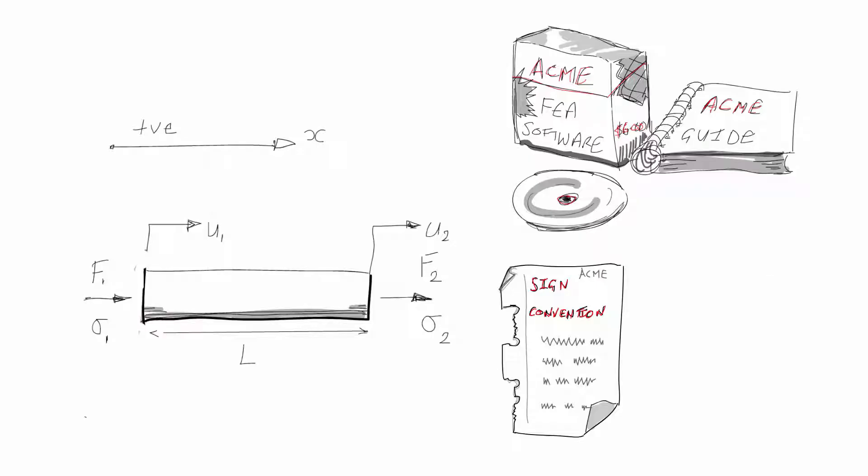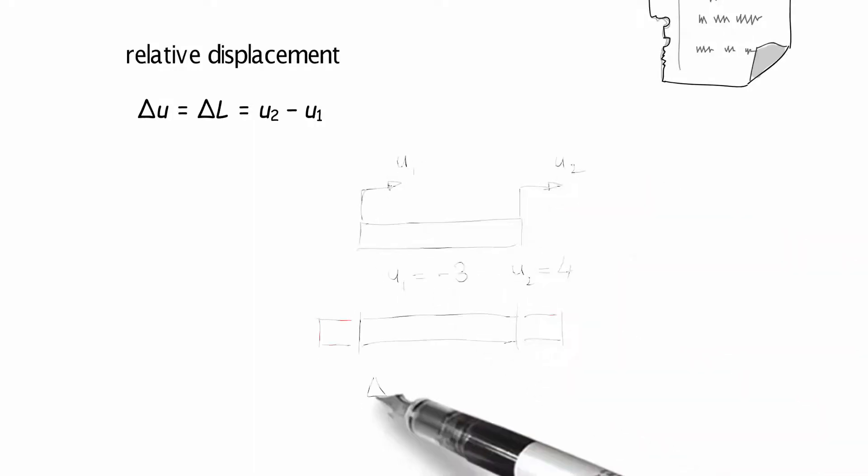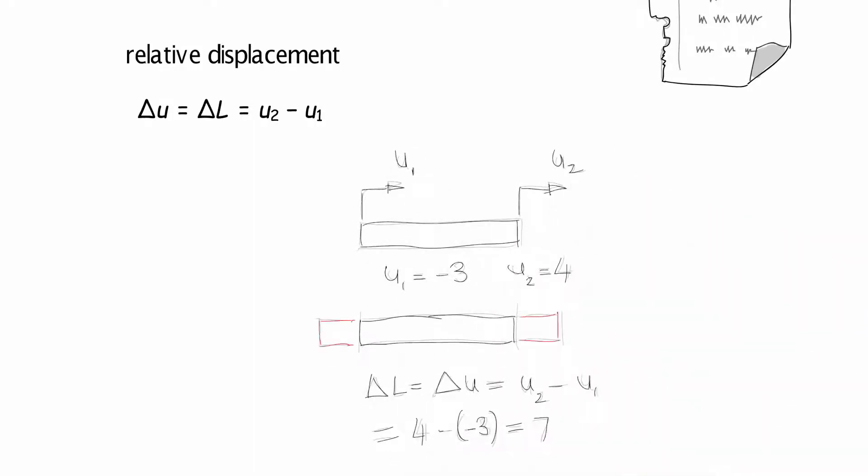Let's check to see if the displacement coordinate system makes sense. Remember from the last video the definition for the relative displacement. Let's put some numbers in and see how it works out. u1 is displaced to the left three units. u2 is displaced to the right four units. If we stick to our sign convention, then the change in length or relative displacement works out to be seven units. That all seems quite logical as long as we stick to that sign convention.